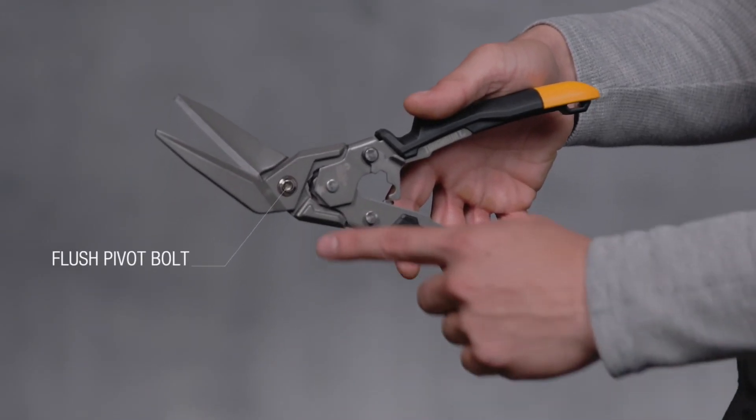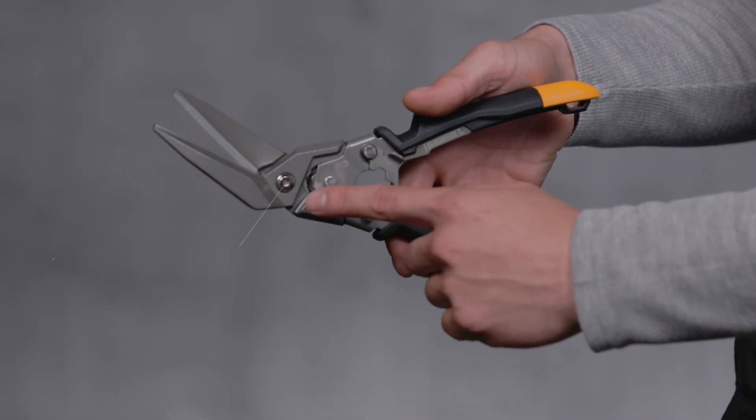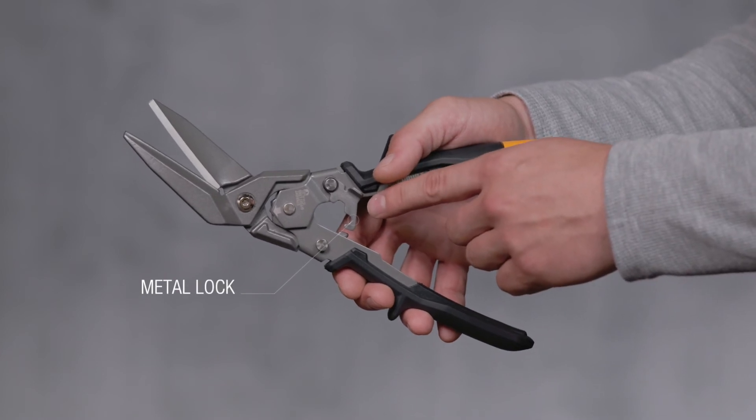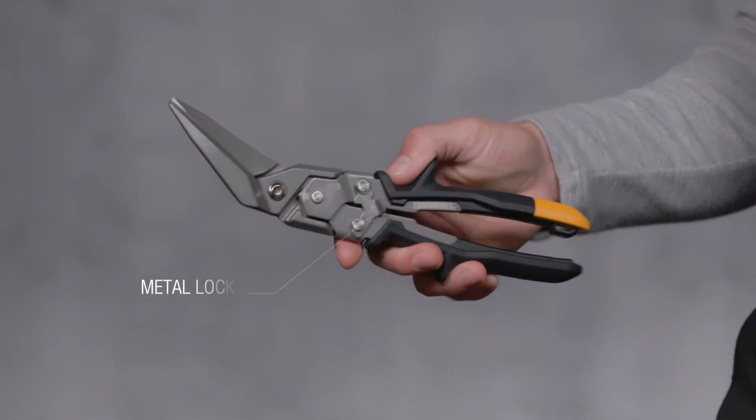The flush pivot bolt will not hang up on material for easy use. And the metal lock secures the tool for storage and is easily operated with one hand.